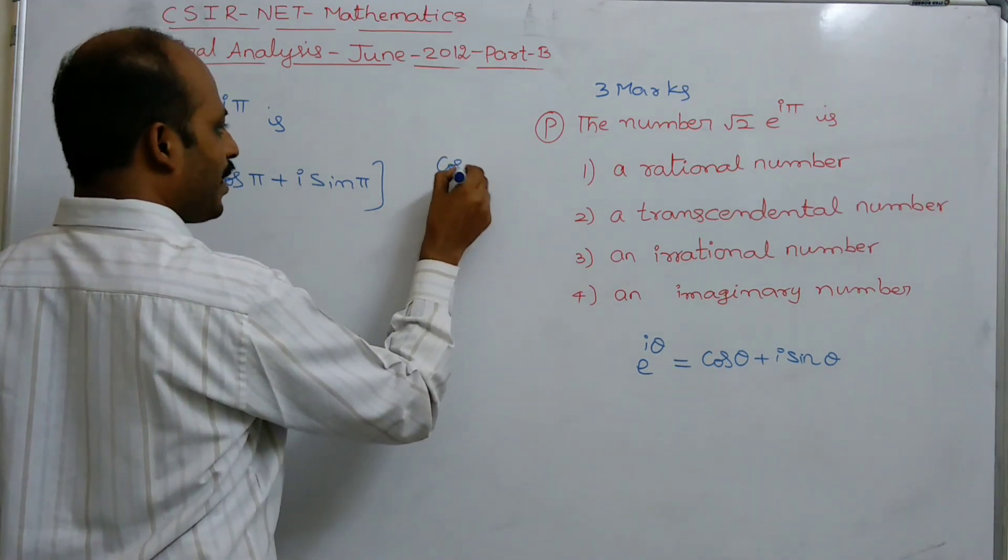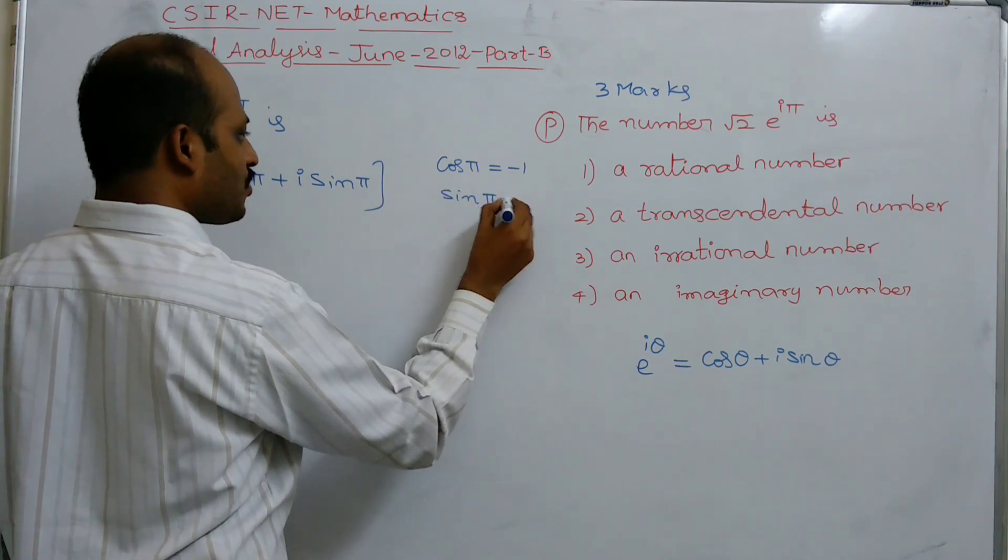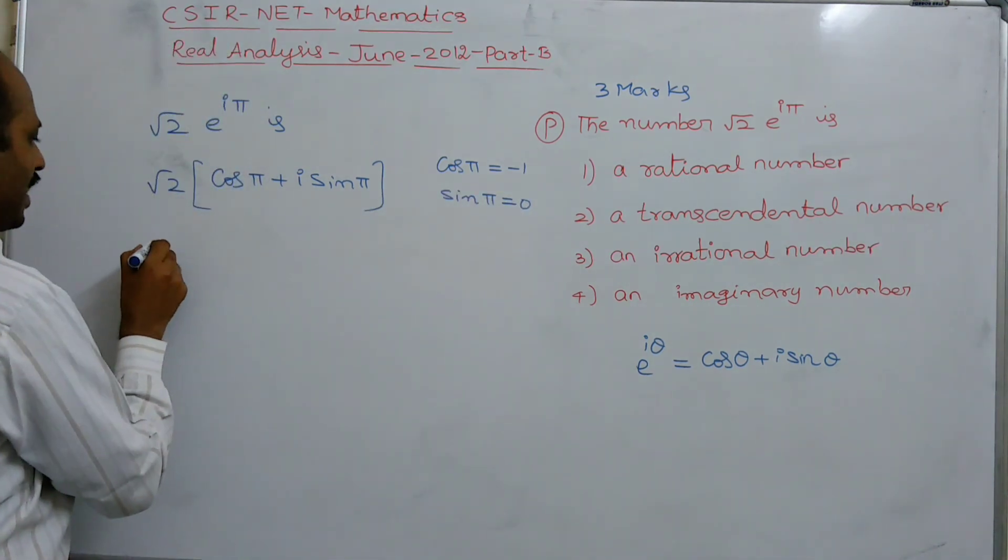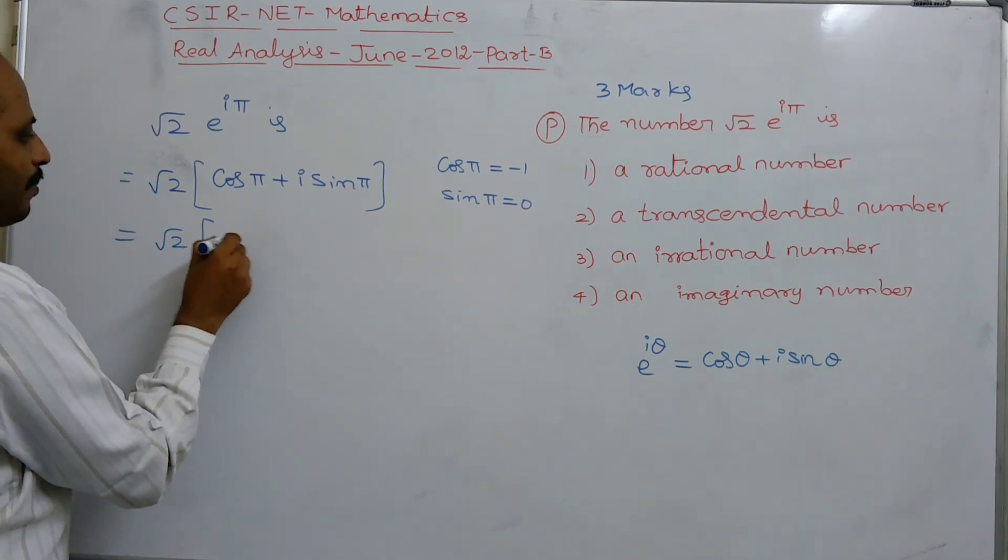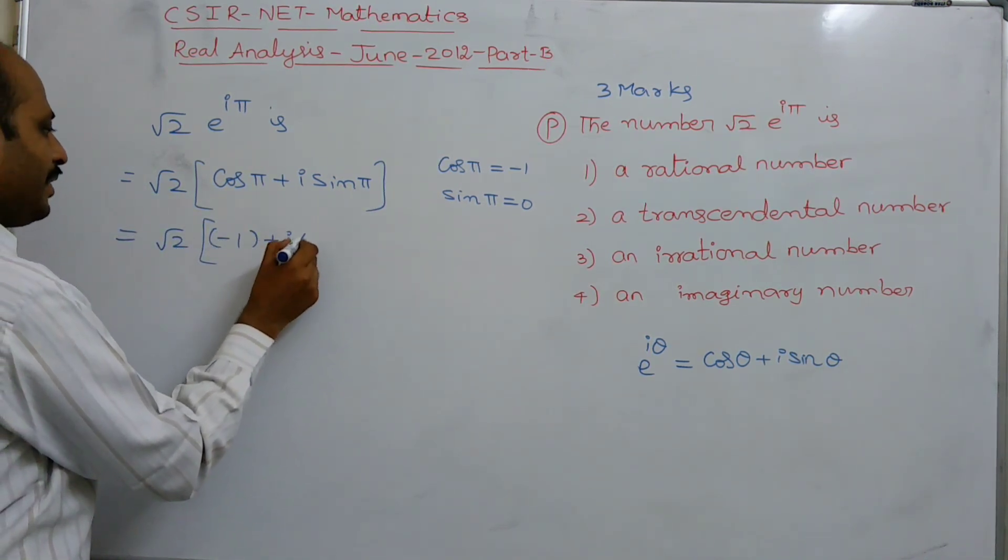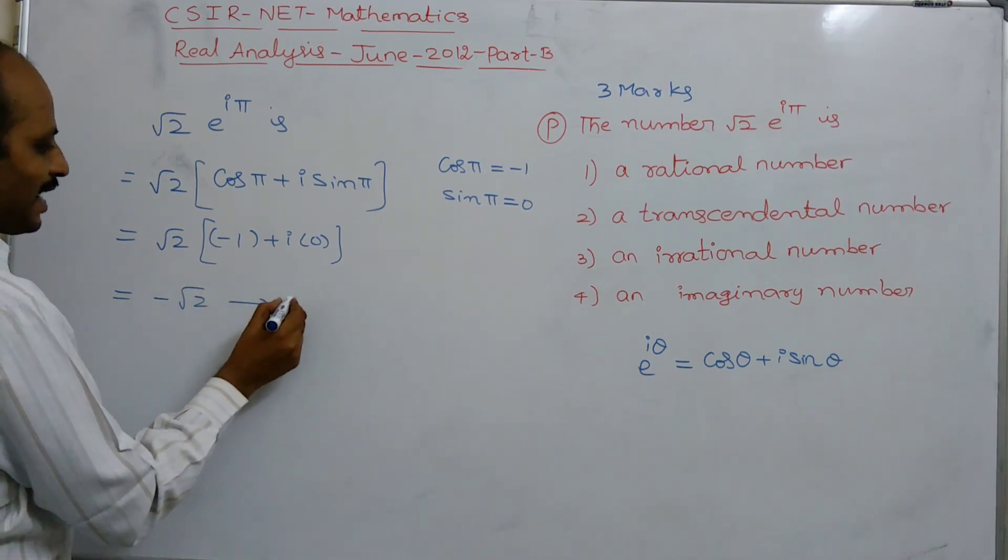We know that cos π = -1, sin π = 0. So substitute that: √2 × (-1 + i × 0). You get simply -√2, which is an irrational number.